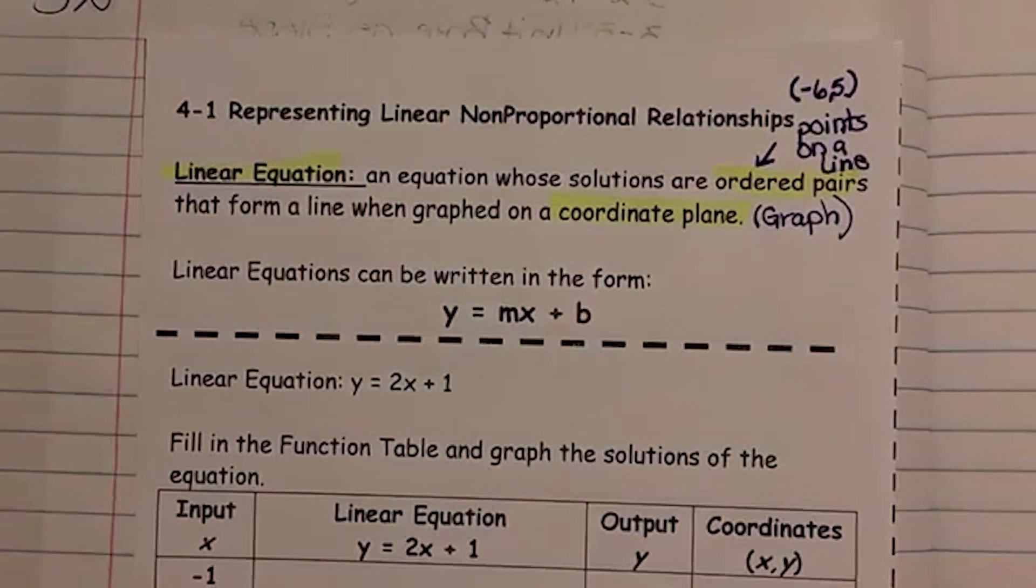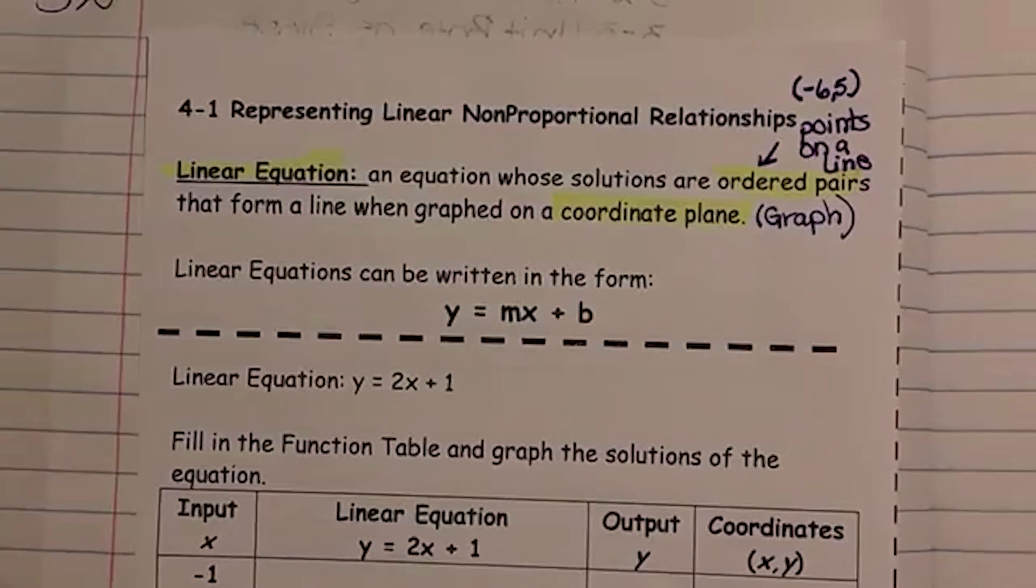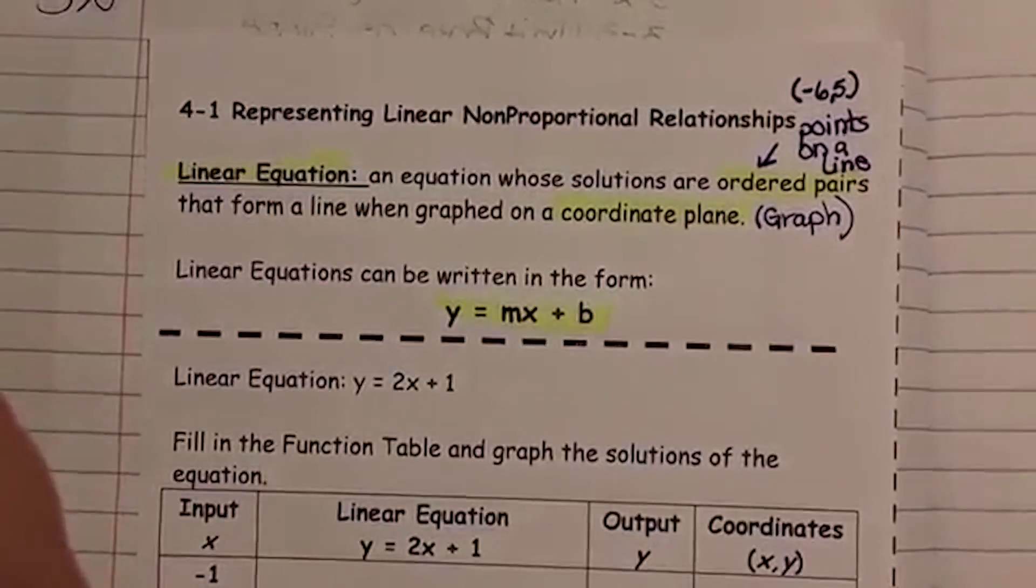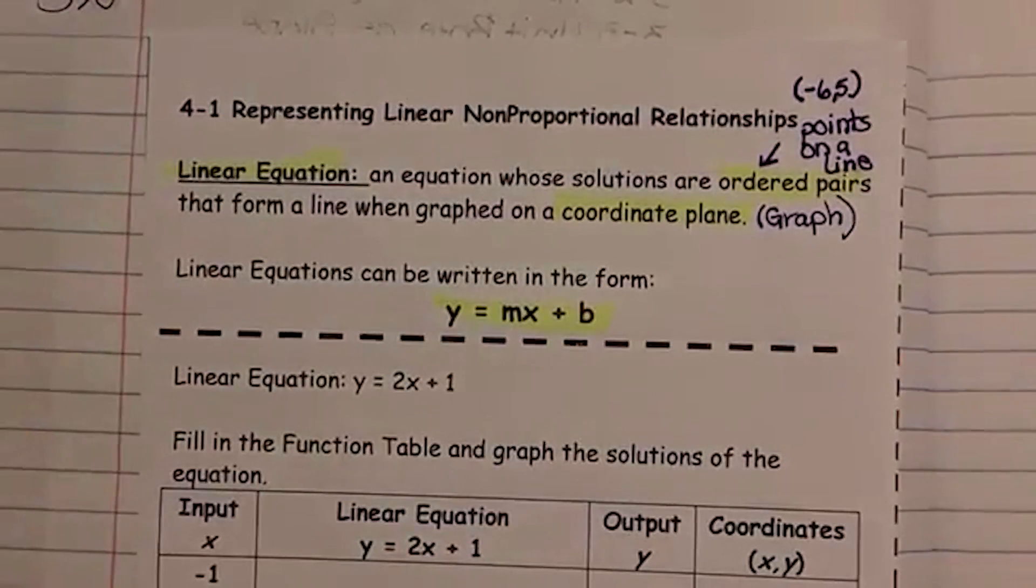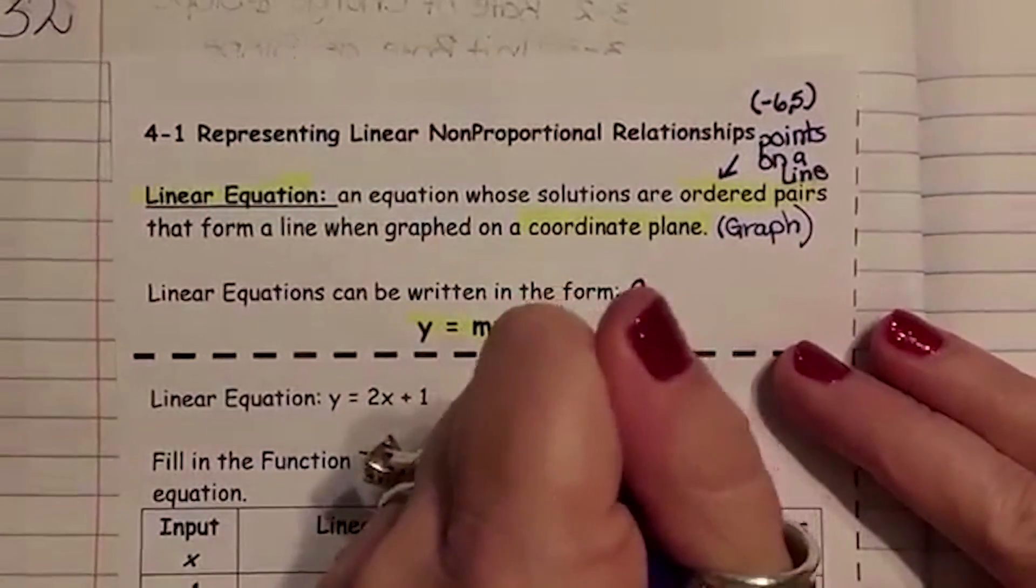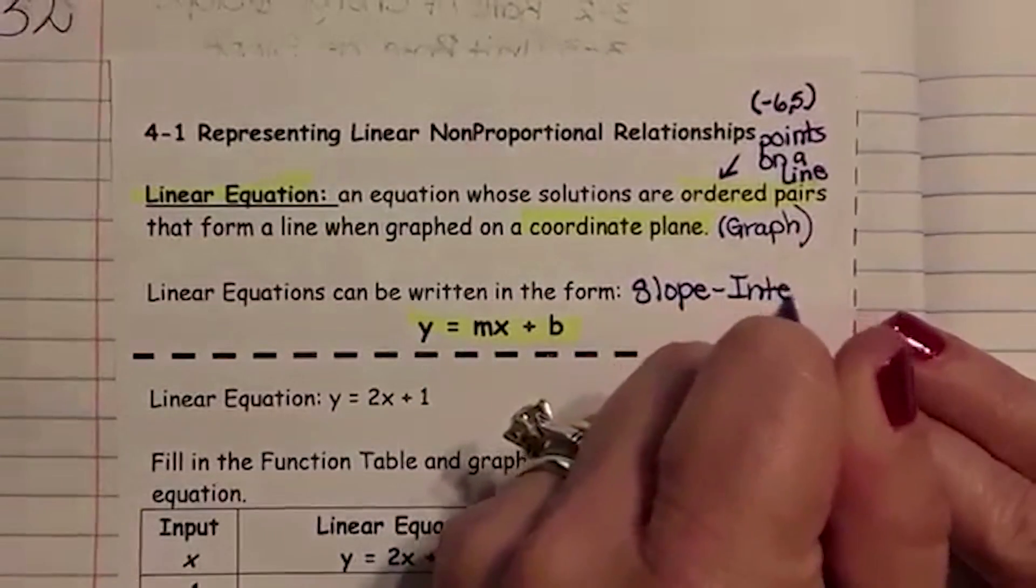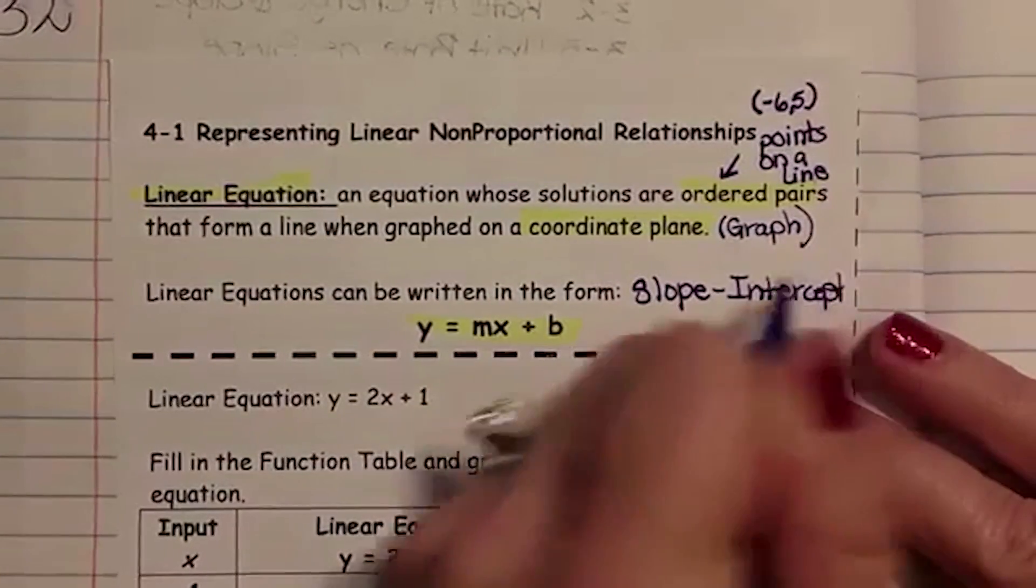Linear equations can be written in the form of y equals mx plus b. And y equals mx plus b is our slope intercept form.